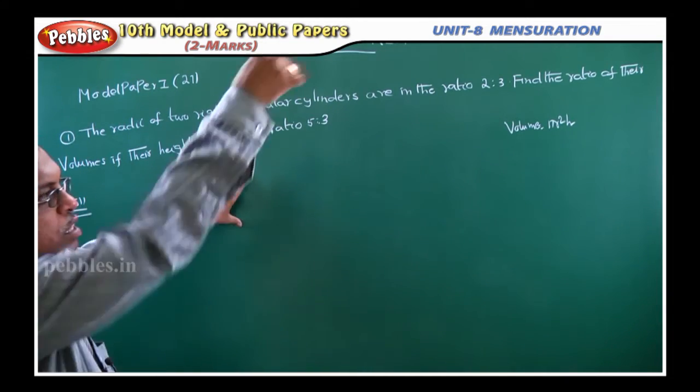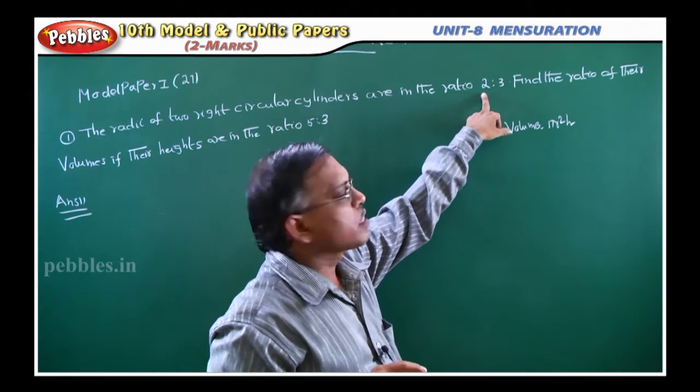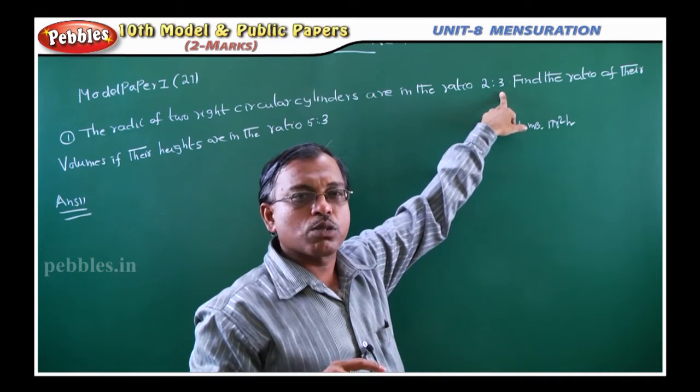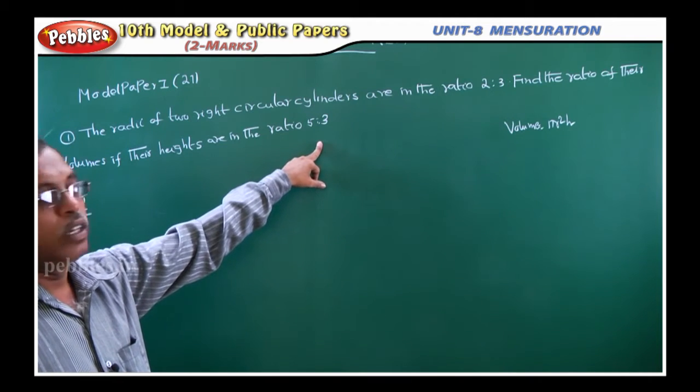Here in this formula, r1 is the radius of first cylinder and r2 is given. The ratio is given r1 is to r2. Similarly, the heights ratio is also given h1 is to h2. Then we have to find v1 is to v2.